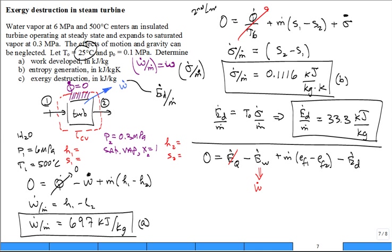You can solve for this equation: e dot d divided by m dot equals negative w dot divided by m dot plus e f1 minus e f2. The e f1 minus e f2 is h1 minus h2 minus T naught times s1 minus s2. But what did we have for negative w dot over m dot? That was h1 minus h2.